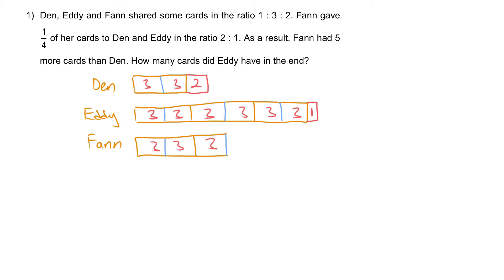Given that Fan had 5 more cuts than Dan in the end — Fan had 9 units and Dan had 8 units. Therefore, we can conclude that 1 unit is equal to 5.